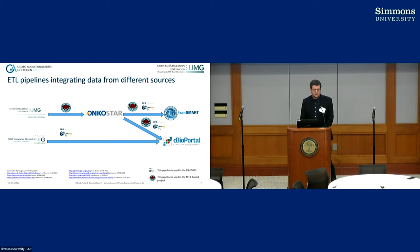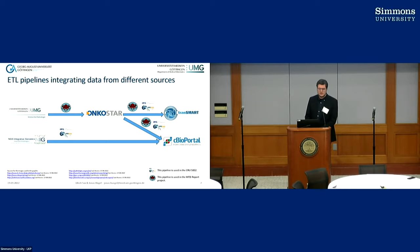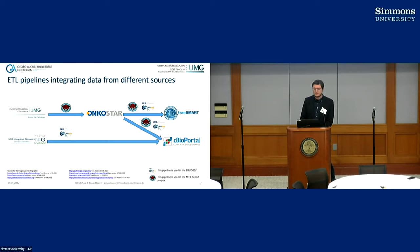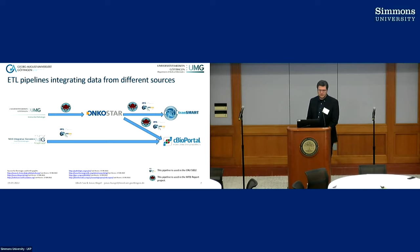In the MTB report project, next-generation sequencing is done by the Institute of Pathology for routine patients. Since the MTB at the UMG in Göttingen is an evolving prototype with many changes, we currently receive data in an unstructured way — a PDF report is sent to study nurses who enter information into OncoStar, the cancer registration system. To get this data automatically is quite hard to parse, so we tried another approach: getting the data directly from the Excel and CSV files created in the pathology department.